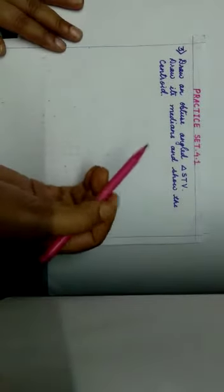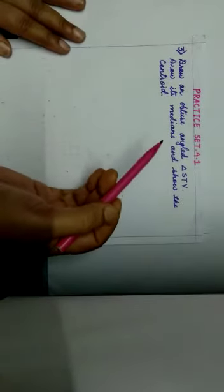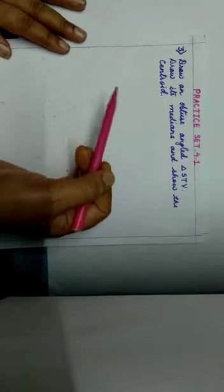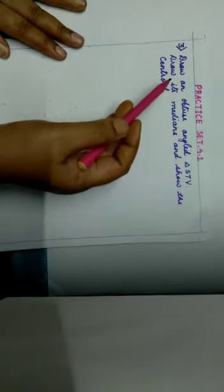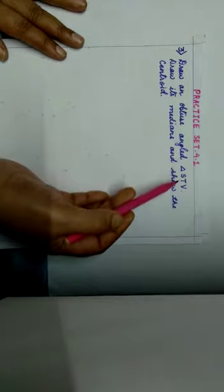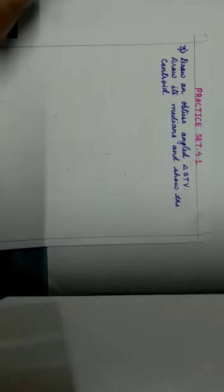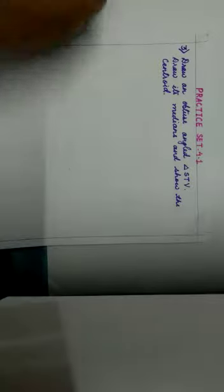In the previous video we have seen practice set 4.1 question number 1 and question number 2. Question number 3 is: draw an obtuse angle triangle STV, draw its medians and show the centroid. The segment joining the vertex and the midpoint of the opposite side of a triangle is called a median.